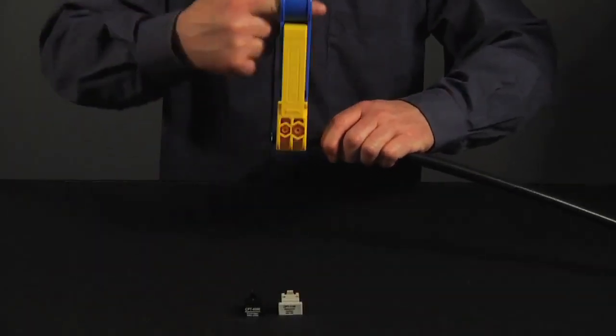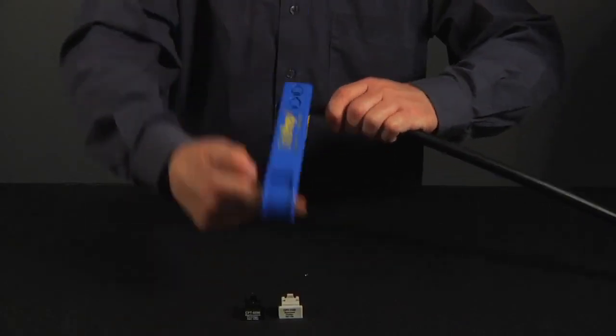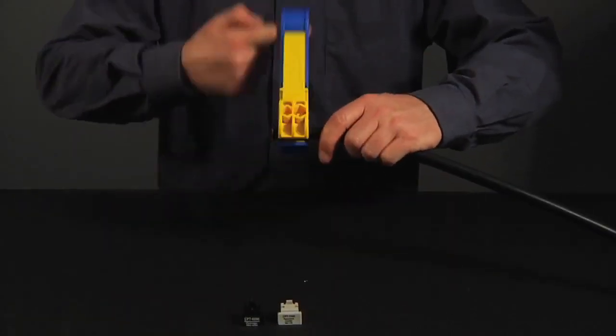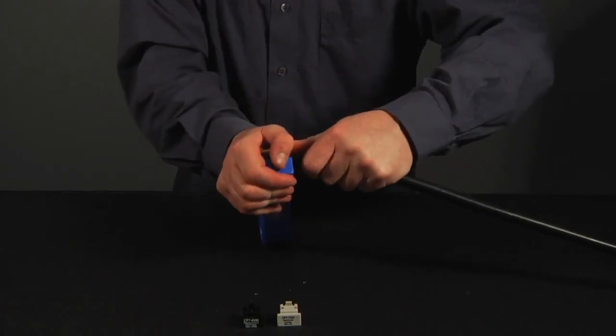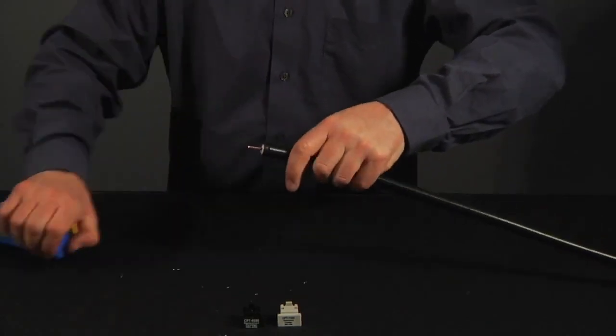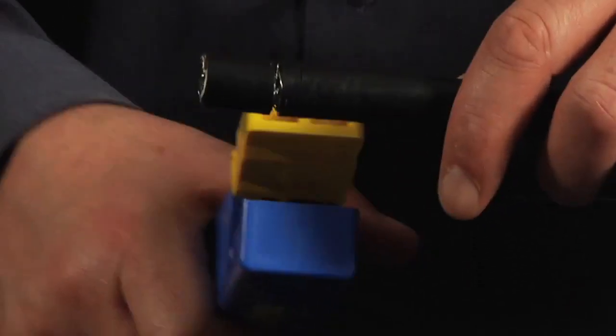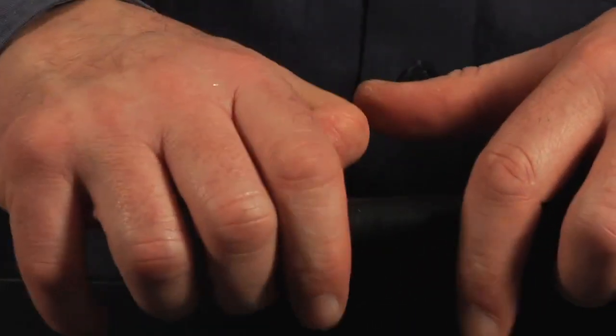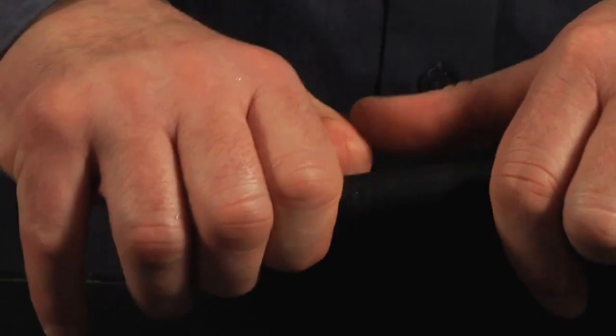Rotate the tool around the cable a few turns until you no longer hear the braid being cut. For small diameter cables you can pull the jacket and dielectric off the cable with the tool. For large cables squeeze the handles together to open the tool and remove it from the cable. Manually pull the jacket and dielectric from the cable.